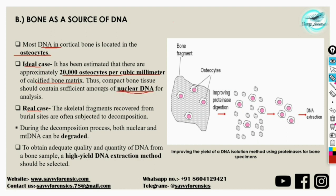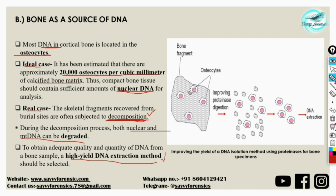In real cases, skeletal fragments recovered from burial sites or crime scenes are subjected to decomposition, often recovered many years after the crime. During the decomposition process, both nuclear and mitochondrial DNA can be degraded. We therefore have to use high-yield DNA extraction methods to extract an ample amount of DNA for profiling. Proper grinding and processing are very important during the DNA extraction procedure. In the diagram, you can see a bone fragment with osteocyte cells containing nuclear DNA; the process involves digesting it with proteinase enzymes and then extracting the DNA from the osteocytes.